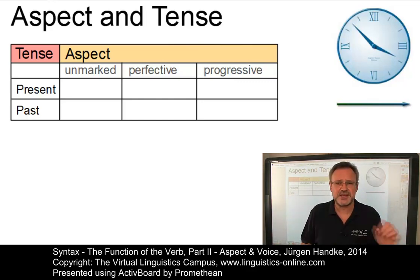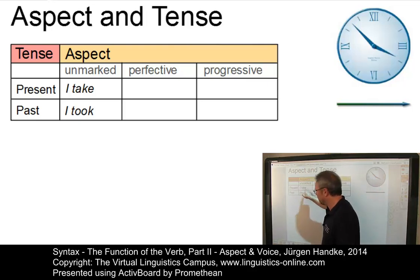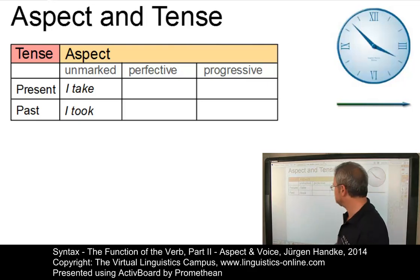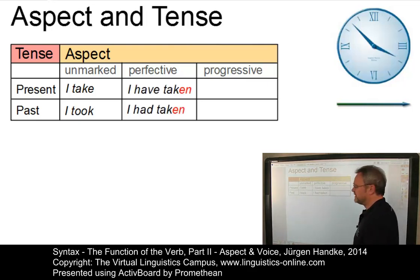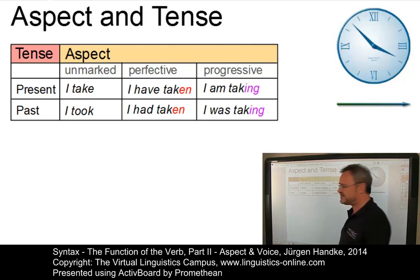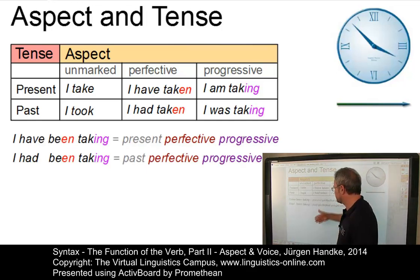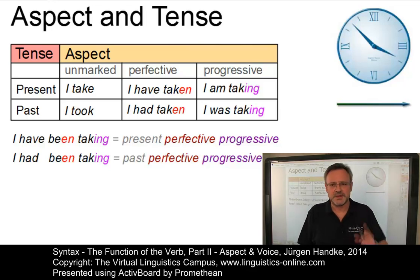The interconnection between tense and aspect in present-day English provides us with a well-definable system of contrast. We have the unmarked present tense, I take; past tense, I took, where in took a vocalic change indicates the past tense. We then have the present and past tense perfective aspect: I have taken versus I had taken. And the present and past tense progressive aspect: I am taking versus I was taking. We also have combinations of both: I have been taking — present perfective progressive — and I had been taking — past perfective progressive. By the way, the term simple is often used instead of unmarked.